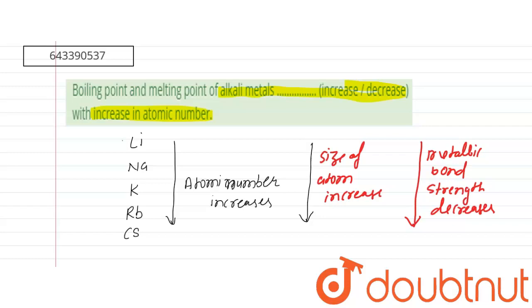Therefore, the melting and boiling point also decreases as we go down the group in alkali metals.